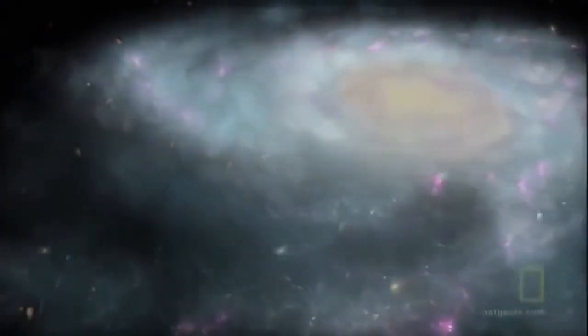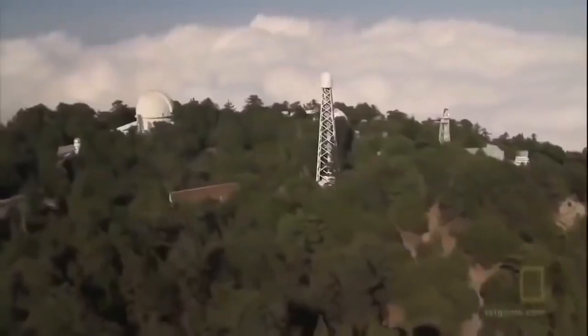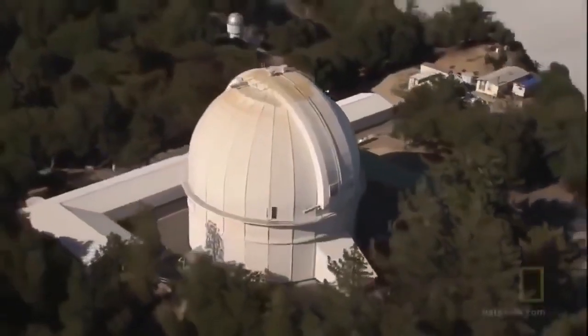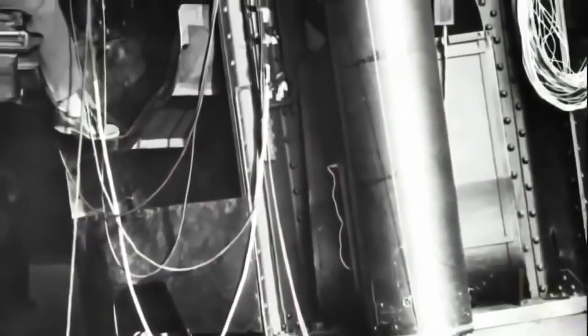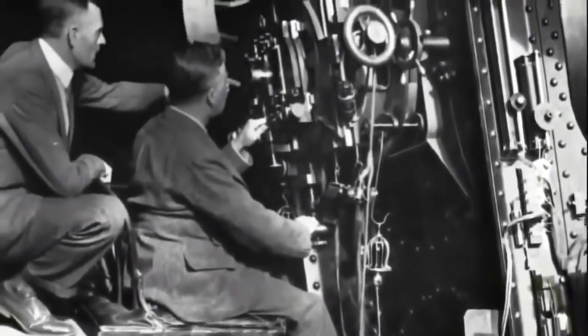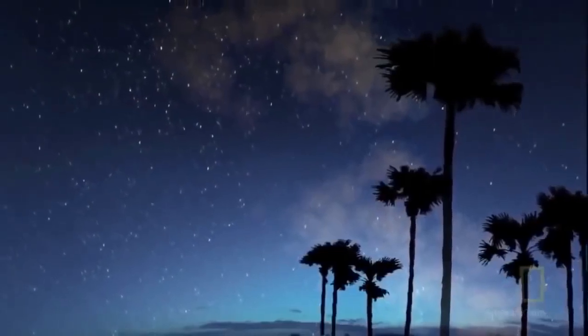However the end comes, it will be a dramatic conclusion. To understand how it all could end, scientists turn to how it began. The mystery starts to be solved here at the Mount Wilson Observatory overlooking Pasadena, California. In 1929, Edwin Hubble makes a strange discovery: the universe is expanding.